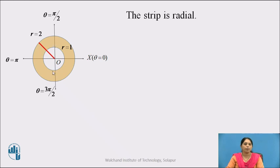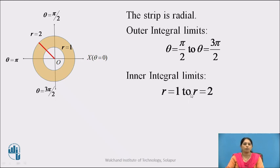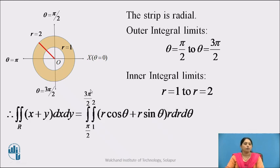The radial strip moves from θ = π/2 to θ = 3π/2 within the region of integration. Therefore, the outer integral limits are θ = π/2 to θ = 3π/2. To find the inner integral limits, look at the ends of the strip: its lower end is on the circle R = 1 and the upper end is on the circle R = 2. Therefore, the inner integral limits are R = 1 to R = 2. So, we rewrite the given integral in polar form: the double integral over R of (x + y) dx dy becomes the integration from π/2 to 3π/2, integration from 1 to 2, where x is replaced by R cos θ, y is replaced by R sin θ, and dx dy is replaced by R dr dθ.